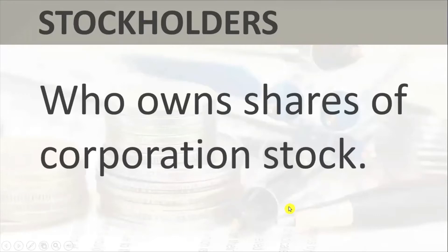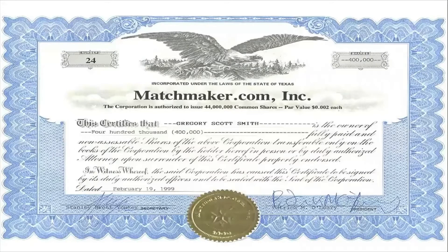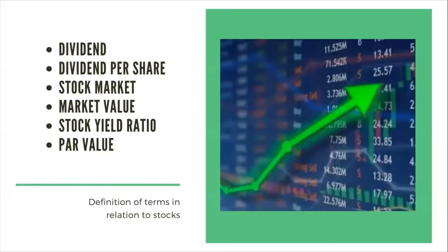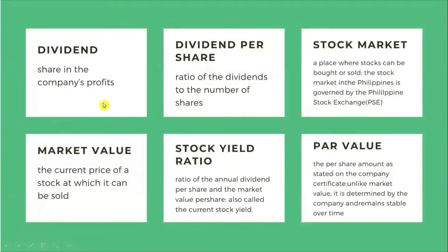Those who own shares of corporation stock are known as stockholders, and the stock is represented by a stock certificate. One way to make money in the market is through dividends or profit from the company's earnings, and the amount depends on how many stocks you have — the more stocks you have, the more dividends you receive. Another way to make money is the buy low, sell high strategy, where you buy stocks at a low price and sell them at a higher price. The dividend per share is the ratio of the dividends to the number of shares.